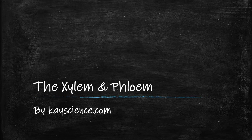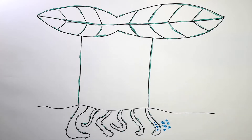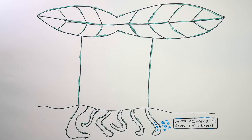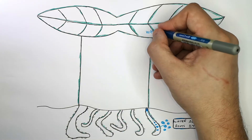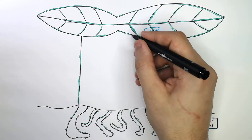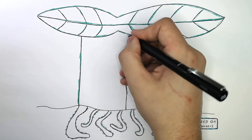The xylem and the phloem by kscience.com. In this video we're going to explain how the xylem and phloem tissues within a plant help transport substances around the plant. Water is absorbed into the plant via the roots and that happens by osmosis. So how does water go from the root where it's been absorbed to the leaf of the plant for the process of photosynthesis?